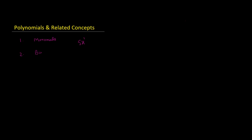The second concept is binomials. This is one way of describing the types of polynomials — classifying polynomials based on the number of terms. Binomials are polynomials which have two terms. For example, 5x^3 plus 5 is a binomial, a plus b is a binomial, and c plus z is a binomial — any two terms.